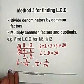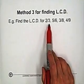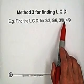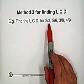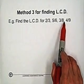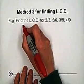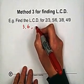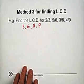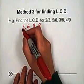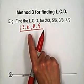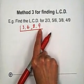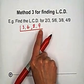Another example: find the least common denominator for 2 thirds, 5 sixths, 3 eighths, and 4 ninths. First, find the common factor for 3, 6, 8, and 9. Write 3, 6, 8, and 9 in a box. Checking all four of them, 3, 6, 8, and 9 don't have a common factor for all of them.